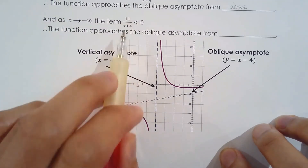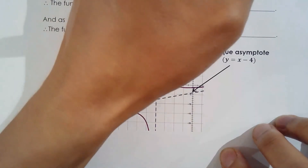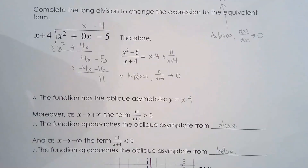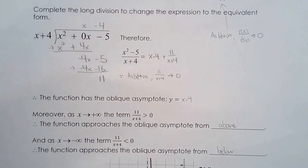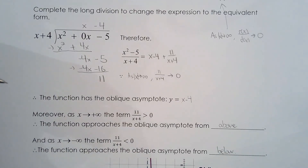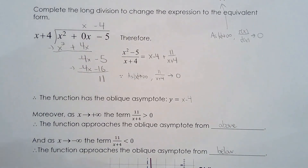Hopefully now you're comfortable graphing any rational function given to you. If you're still having trouble, I'd recommend creating some rational functions with oblique asymptotes and graphing them. You can also explore parabolic asymptotes, or even cubic asymptotes — use graphing software to generate random examples and just be wowed, because parabolic and cubic asymptotes are really cool. Have fun!